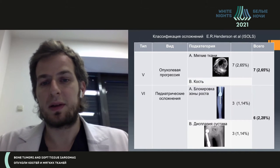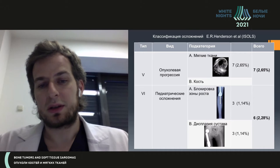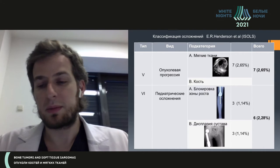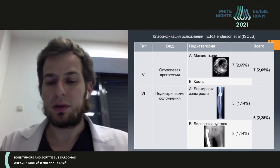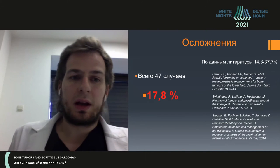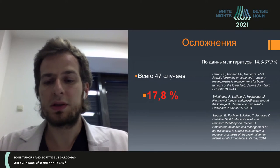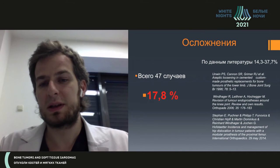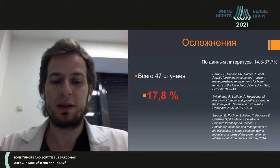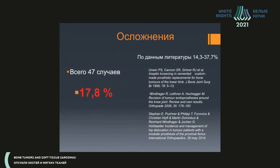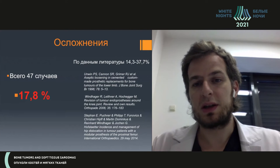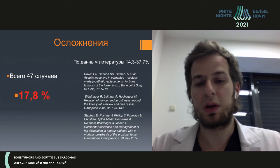The next item is joint dysplasia, which develops after replacement in the hip area. It is quite a serious problem which is hard to treat. Finally, we had 47 cases of complications, reaching almost 18% — a rather high parameter compared with classical primary endoprosthesis replacements. We see that prosthetic replacements in cancer patients is a more complex area where complications develop more frequently.